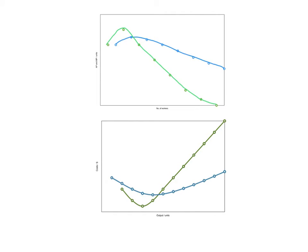Now, one of the learning outcomes in this unit is to be able to explain the relationship between product curves and cost curves. These two product curves are ones we have seen before: this is the marginal product and this is the average product. We remember that while marginal product is higher than average product, diminishing returns has not set in yet. Once marginal product falls below average product, diminishing returns has set in.